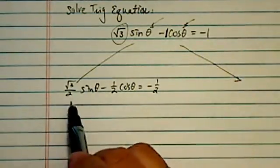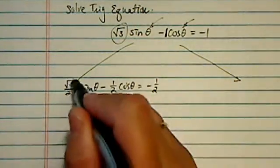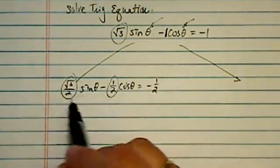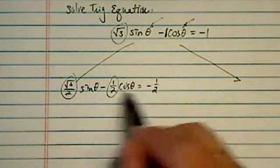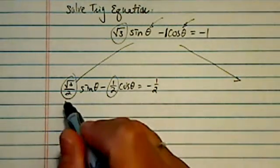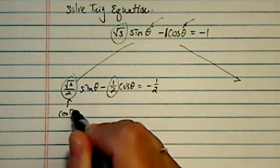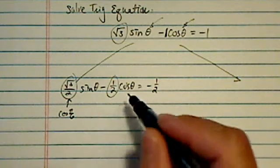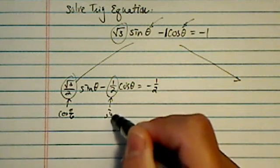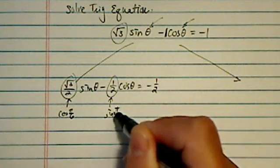So what I did is I divided by two on both sides. Then you can see this is possibly a special angle, special value. Once you recognize that, for example, if you can recognize this one as cosine π/6 or cosine 30 degrees, then this is sine 30 degrees.